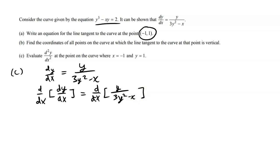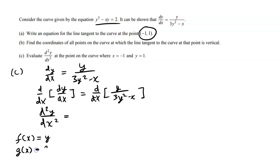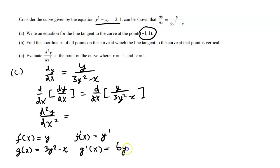The left-hand side will just be the second derivative. On the right-hand side, we apply the quotient rule. The numerator function is y, the denominator is 3y squared minus x. The derivative of the numerator is y prime. The derivative of the denominator is 6y times y prime by the chain rule, then minus 1.